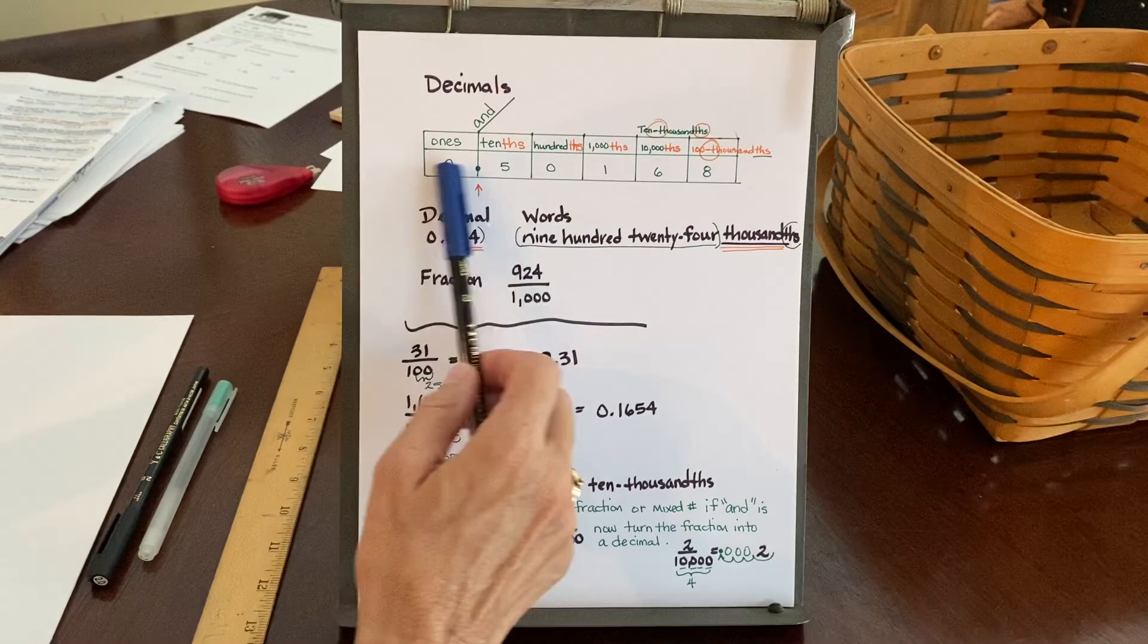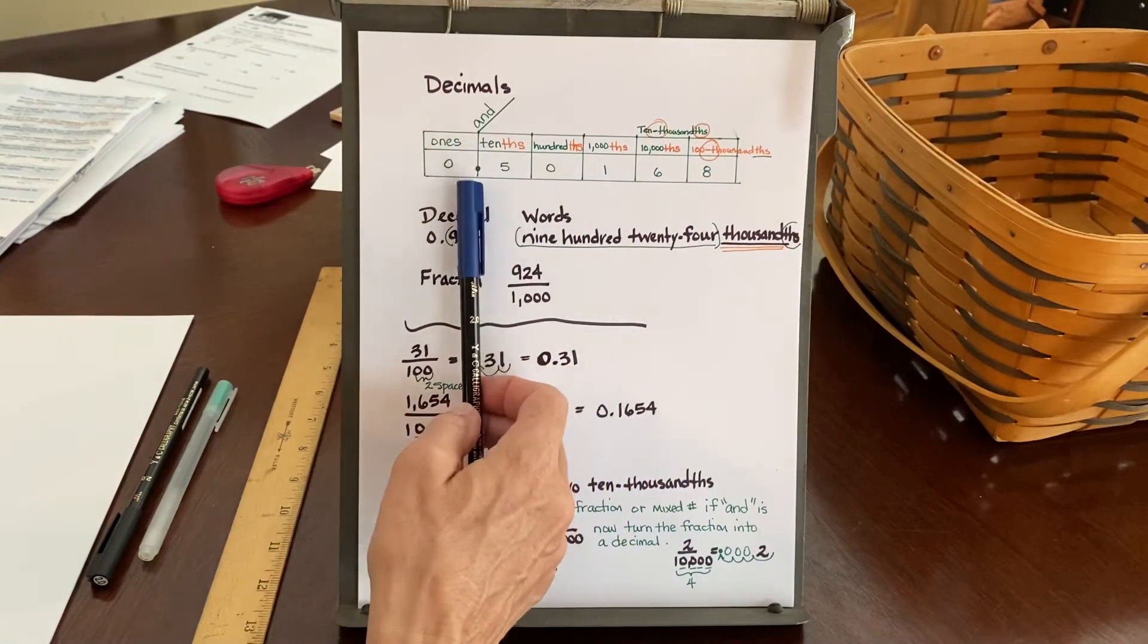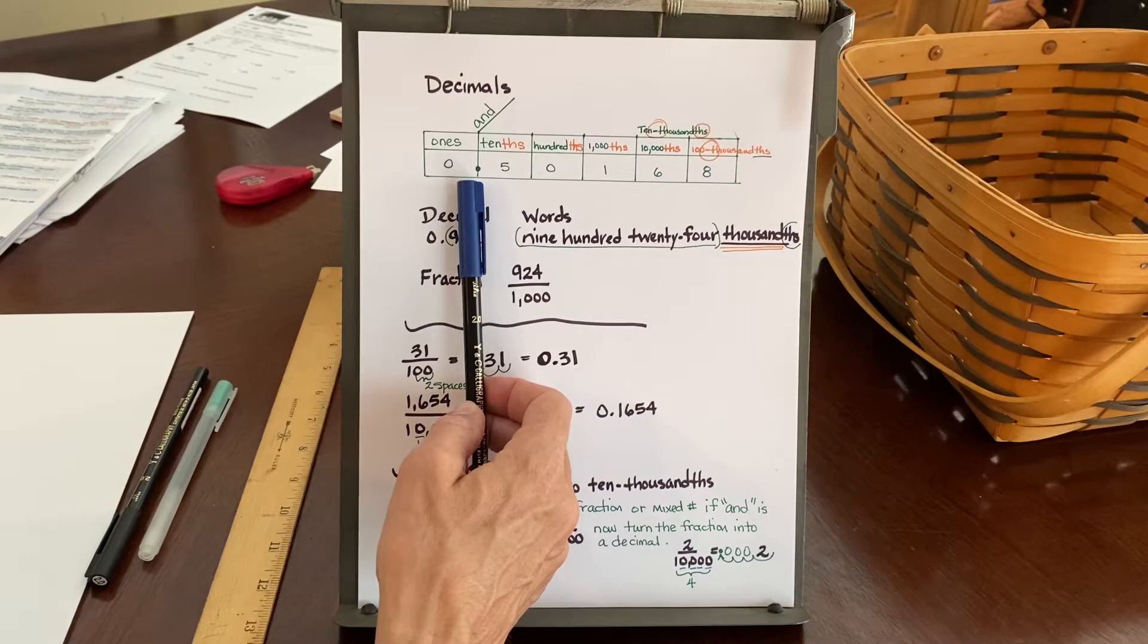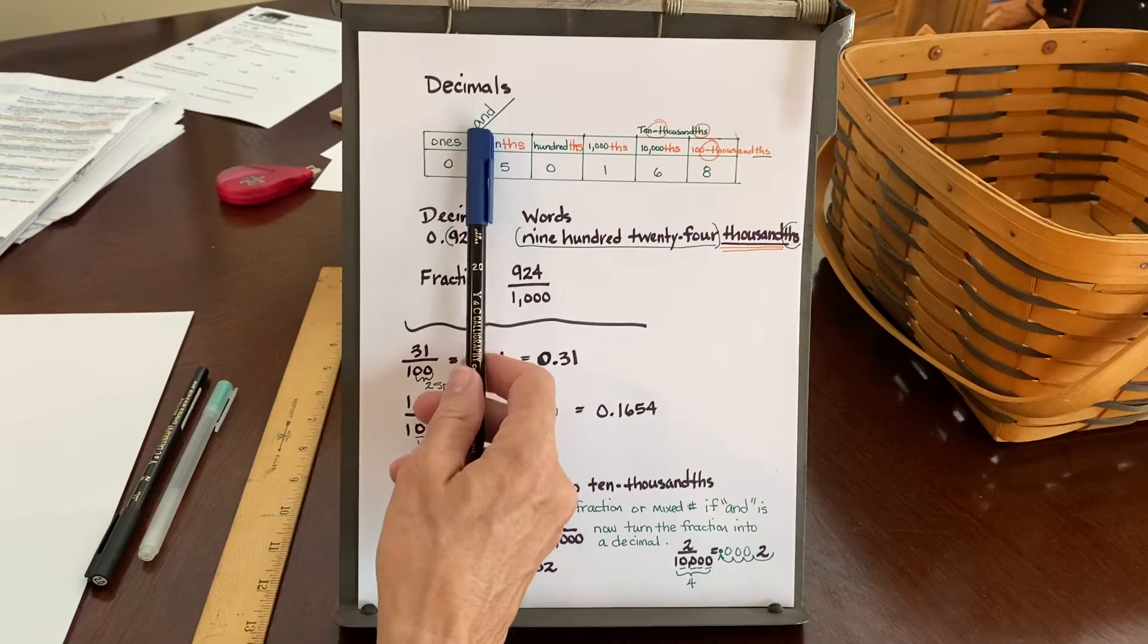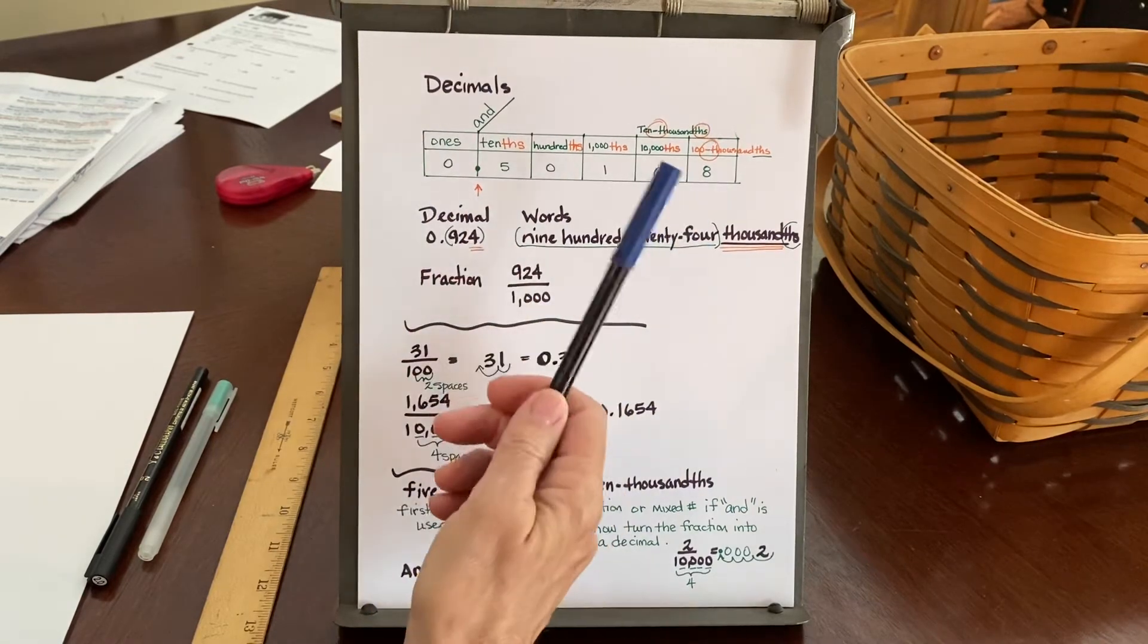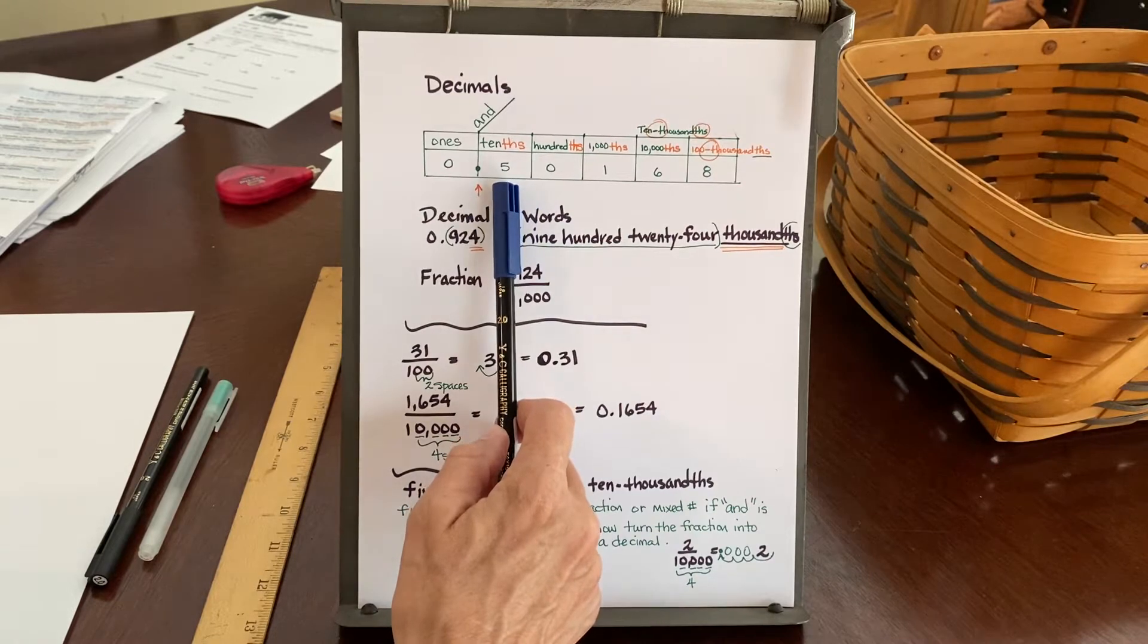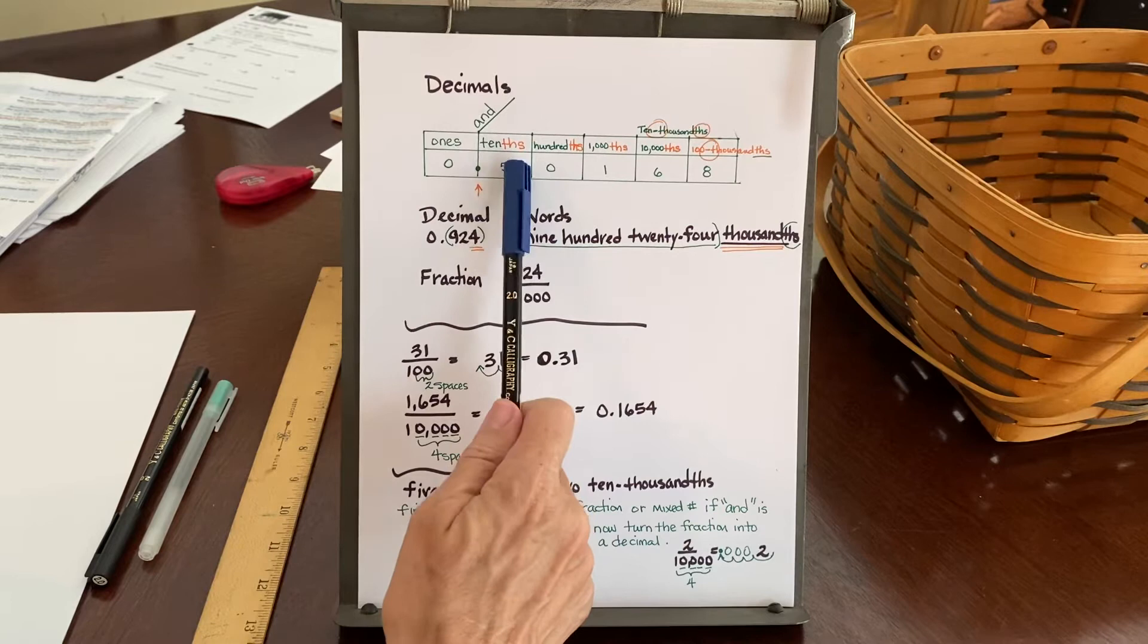Well, going to the right behind the ones column is a decimal. So in every number, if you do not see a decimal, the number is at the back of the number. And the decimal will be represented by the word 'and' if we're using words to write this number down. Beyond the and, beyond the decimal, the next place to the right is not another ones column. It's a tenths with a THS.